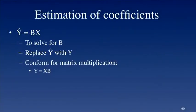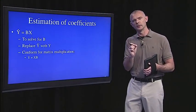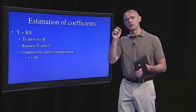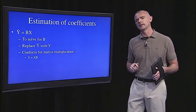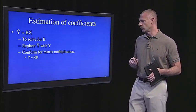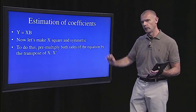So let's see how that works. To solve for B, first replace the predicted scores with the observed scores. And then remember that to do matrix multiplication, the two matrices have to be conformable, meaning that the number of columns in the first matrix has to equal the number of rows in the second matrix. So we have to flip X and B around there, so it becomes Y equals XB.